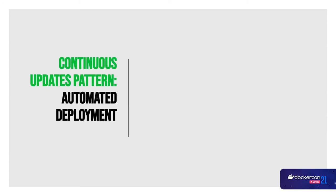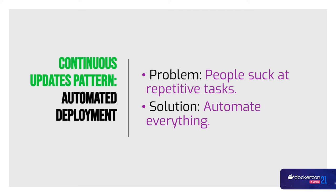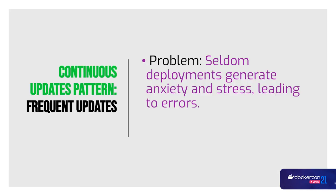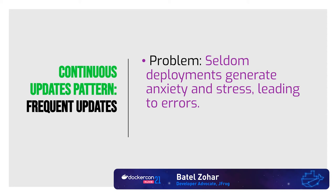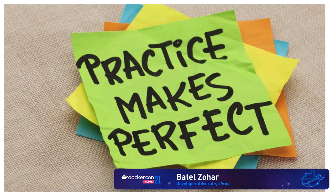Automated deployment: the problem is that people are bad at repetitive tasks — we can't reliably do the same behavior again and again without issues. The solution is to automate everything. We have to be prepared for an update and not stress out. In most cases the engineer wasn't prepared for the update. We need to update frequently to develop the skill for updates — the more we do it, the better we get.